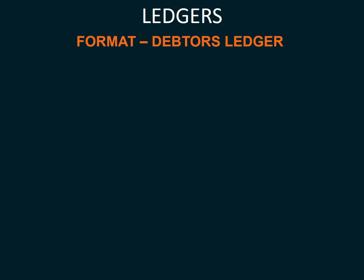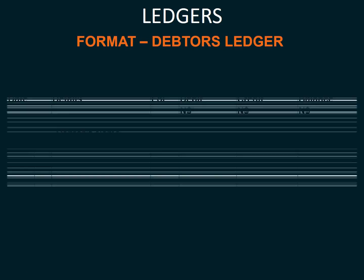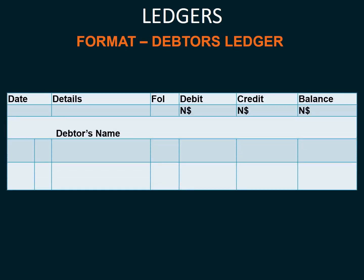The format of the debtor's ledger is as follows: we will have the date, the detail, folio, debit, credit, and balance columns. Every debtor has its own debtor's ledger.